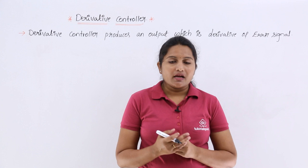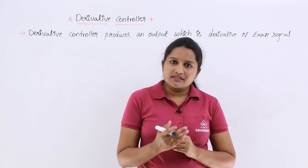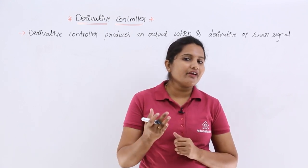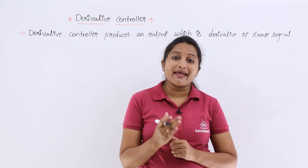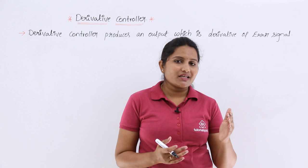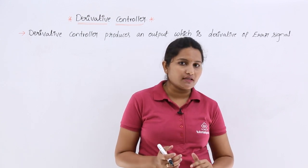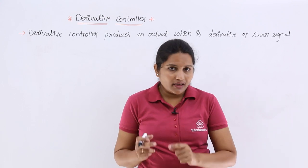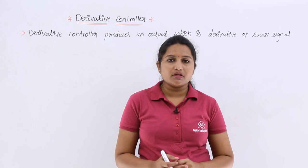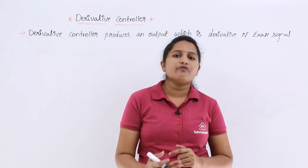Generally, the output of a derivative controller is proportional to the derivative of the input error signal. Previously, when we discussed the proportional controller, the output of that controller was simply proportional to the error signal. But here, as the name indicates — derivative controller — the output is always proportional to the derivative of the input signal.